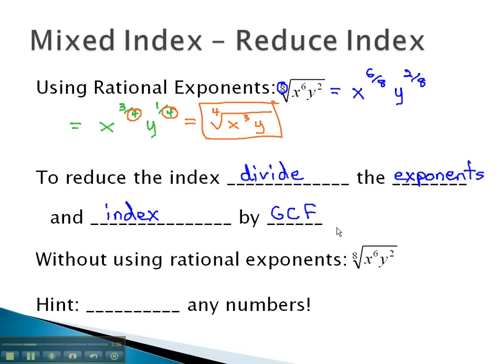Keeping this in mind, that we reduce a fraction by dividing the numerator and denominator by the same thing, we can divide the exponent and the index by the same thing as well. Let's look at that same problem, and see if we can skip the rational exponents, and see what we can divide all the numbers by.